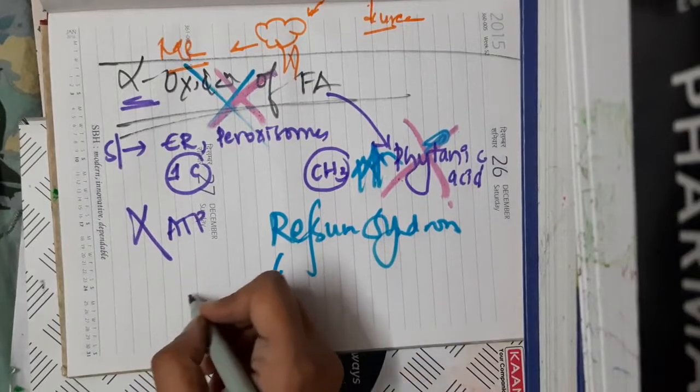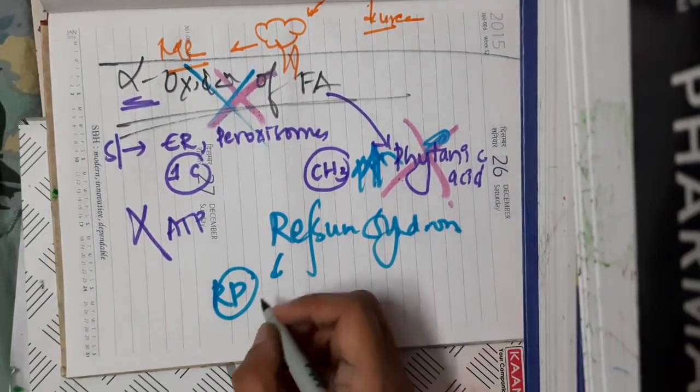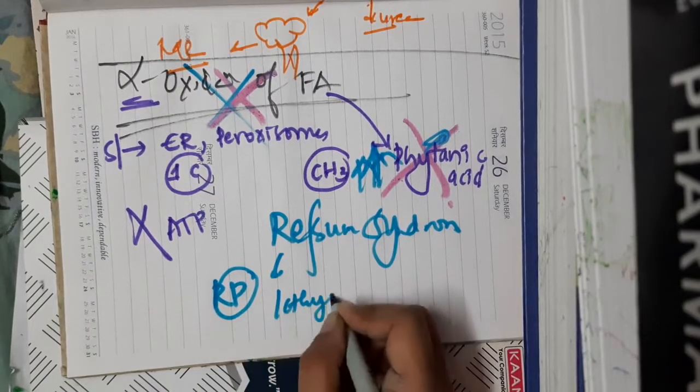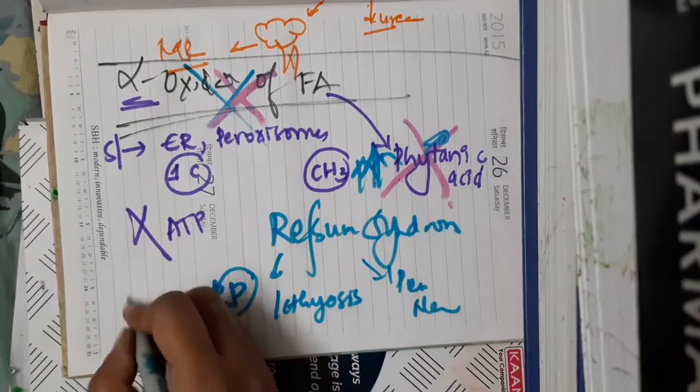In this refsum syndrome, there is development of retinitis pigmentosa leading to impaired vision. The patient can develop ichthyosis and peripheral neuropathy is seen in the patients.